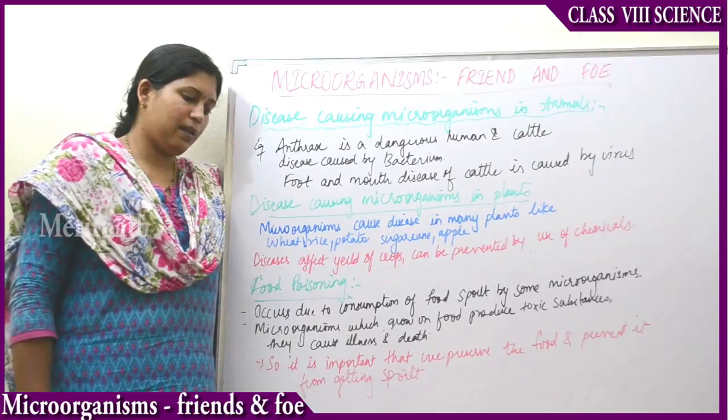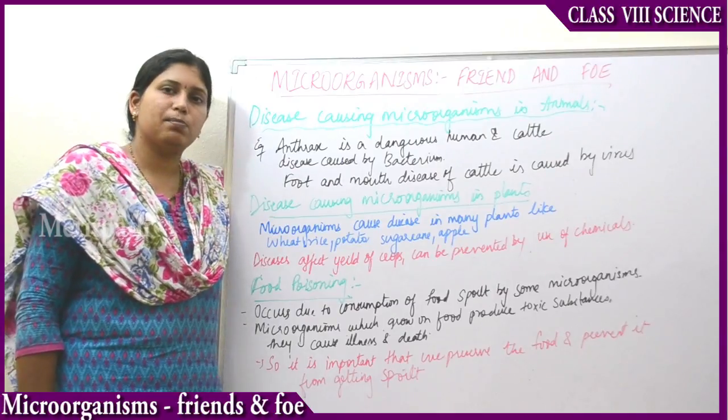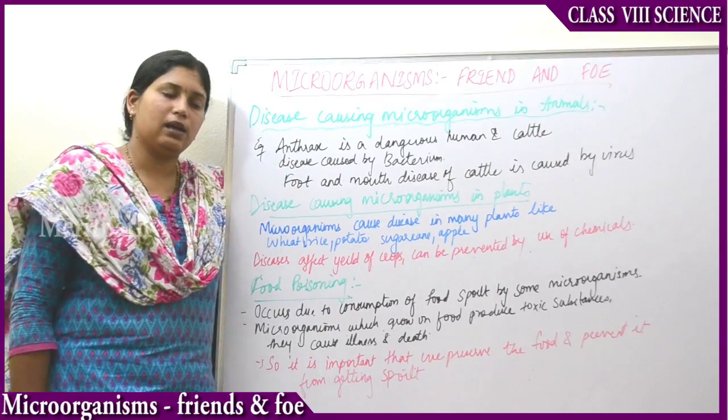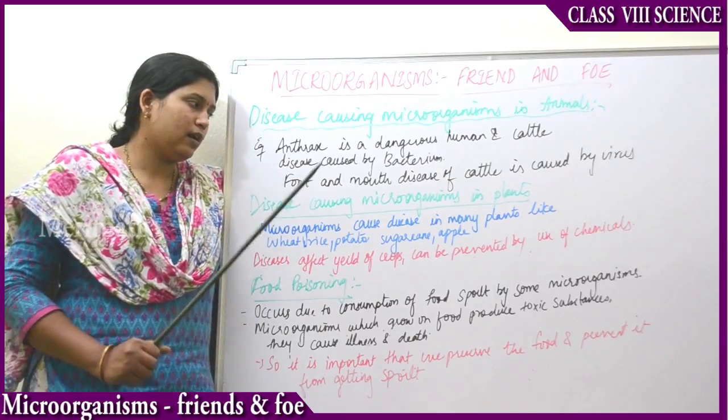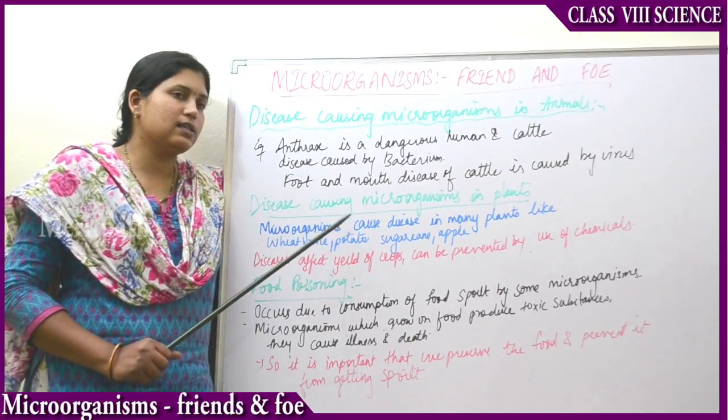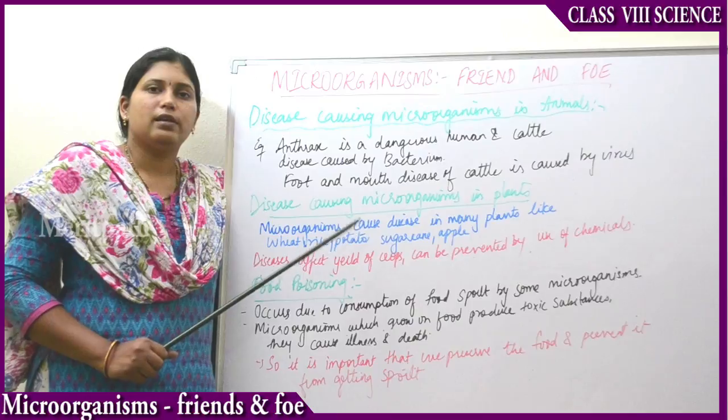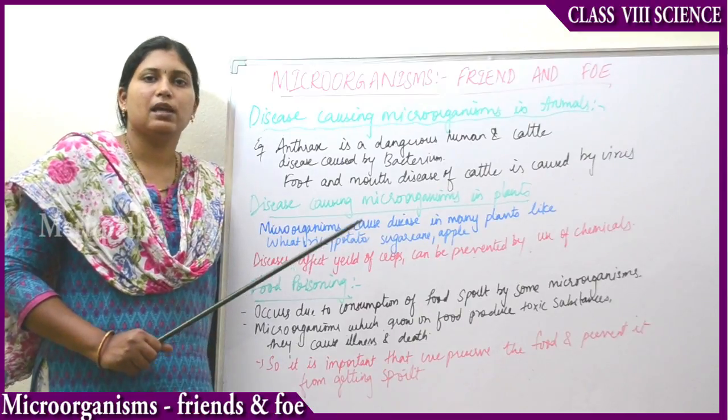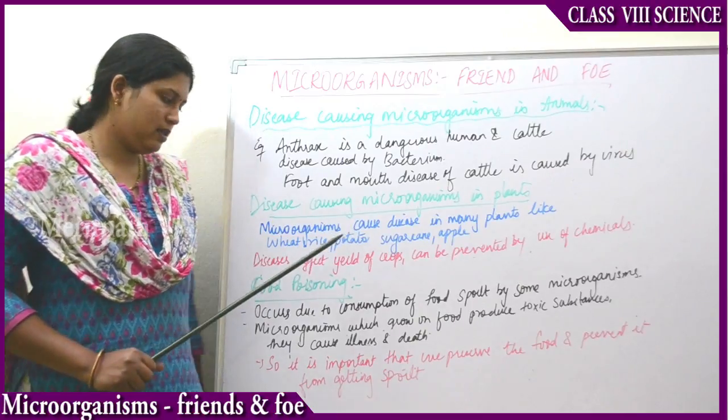So these diseases in plants can be prevented by spraying chemicals. That is disease-causing microorganisms in plants.